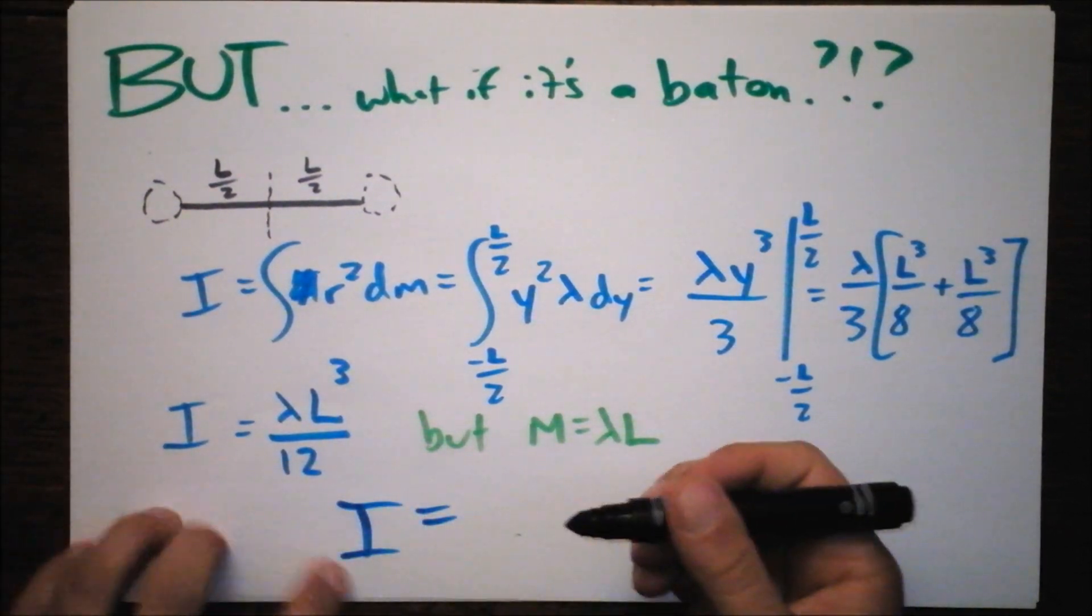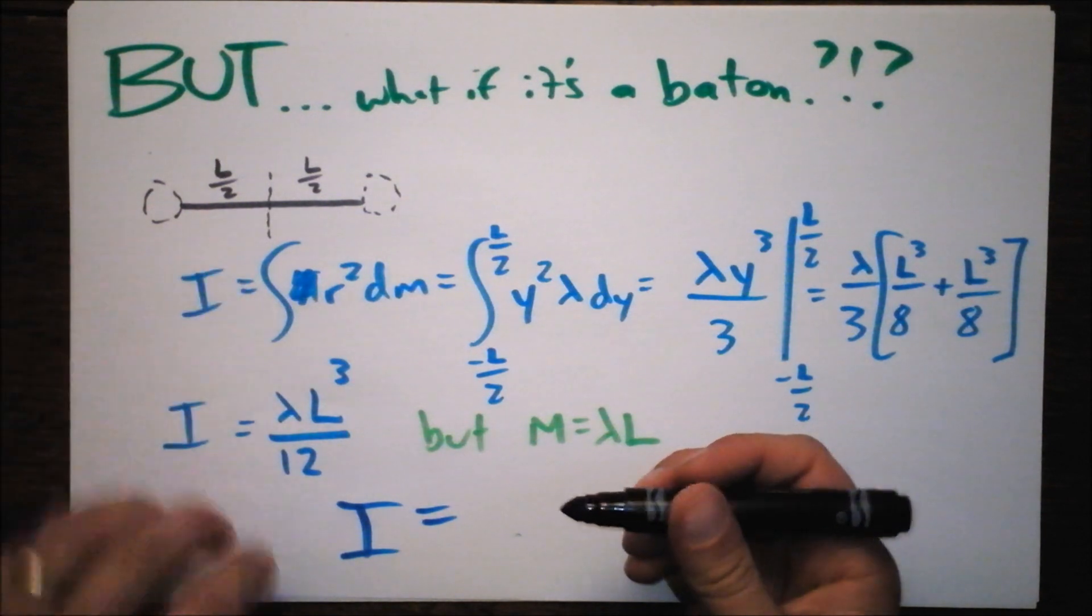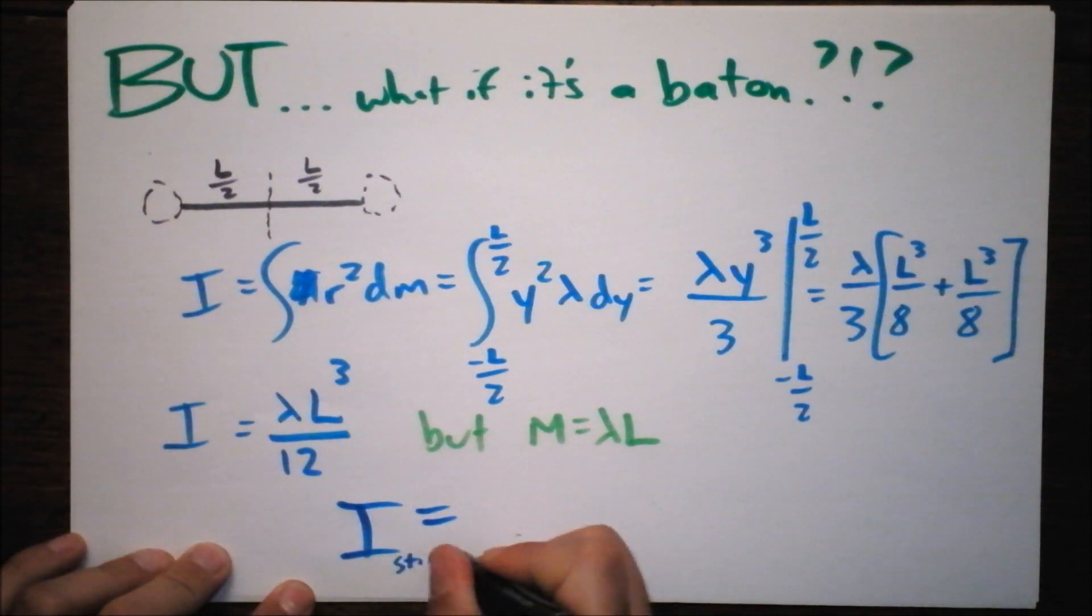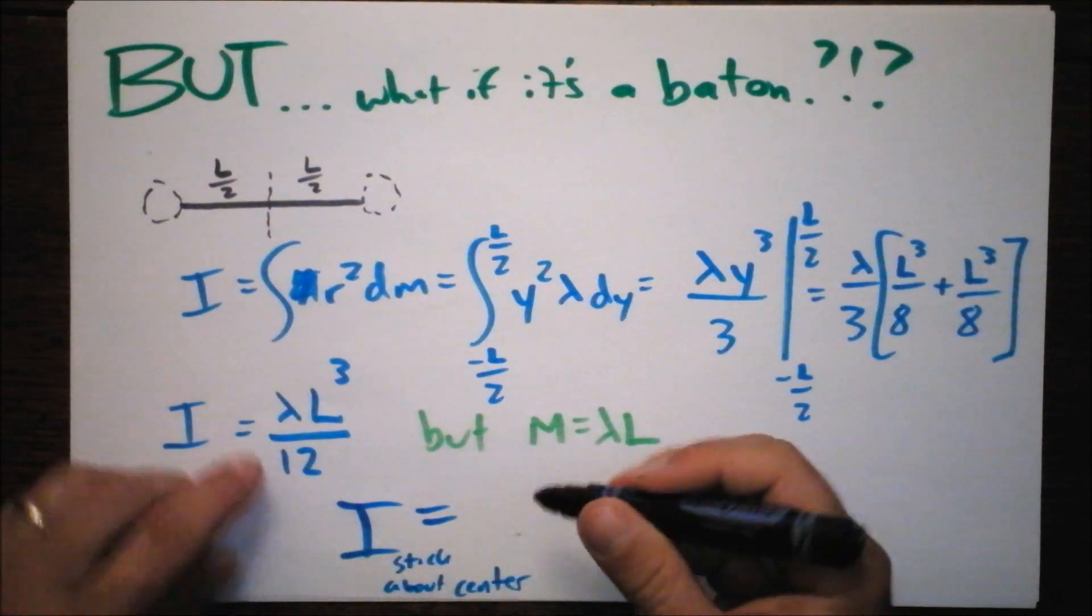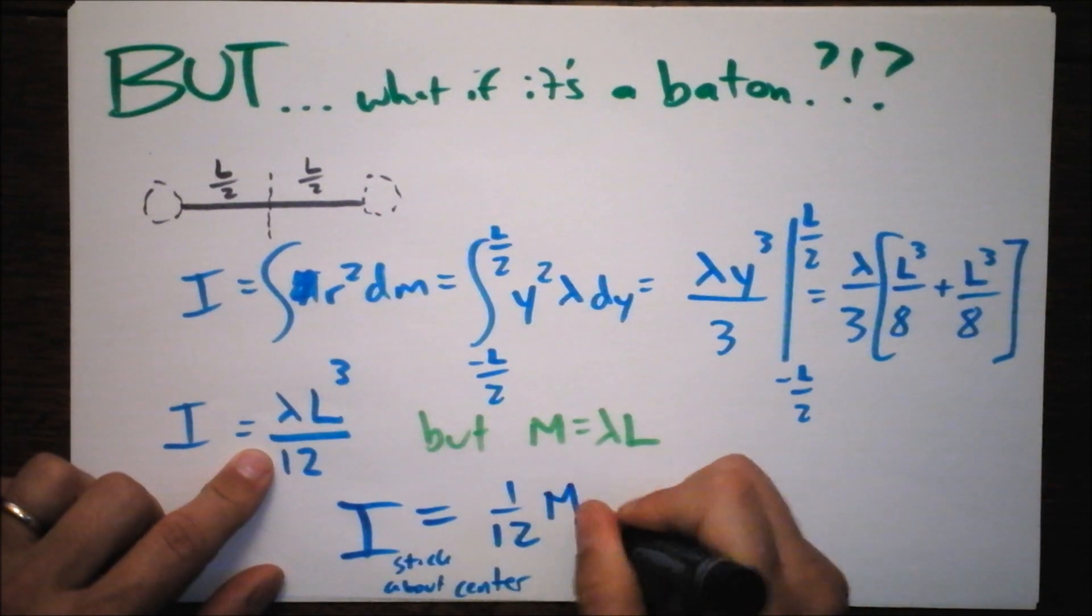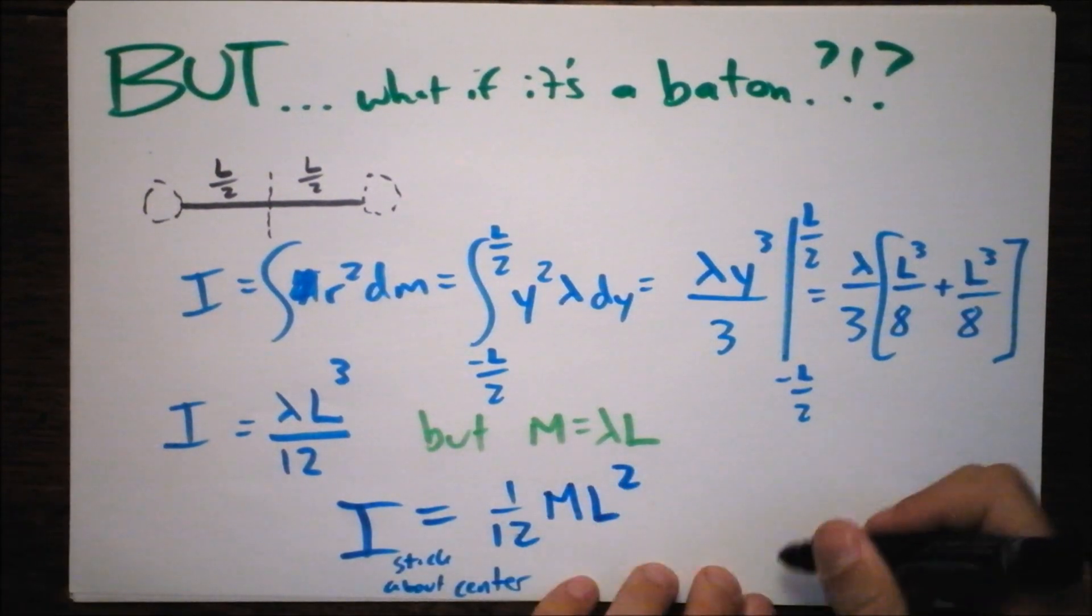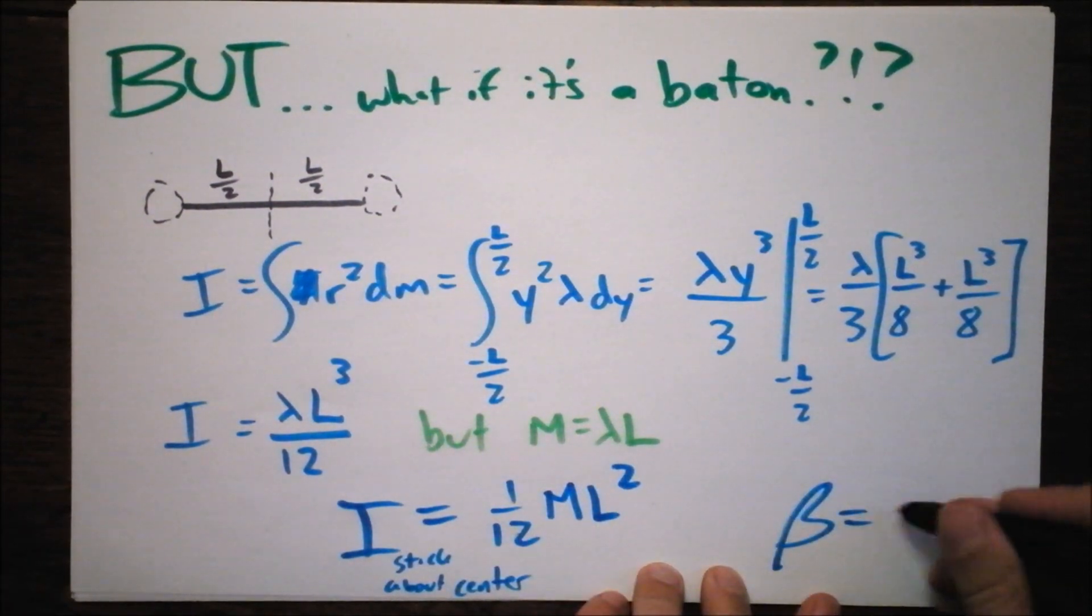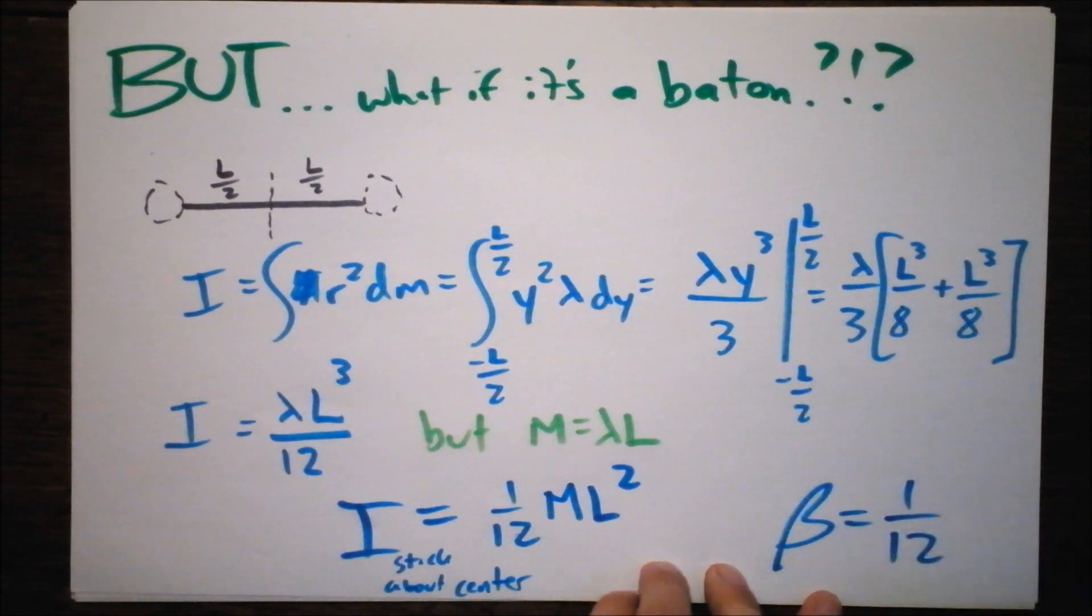In the case of the moment of inertia of a stick about the center, we end up getting 1/12th times the total mass times L squared. So we would say if we're simplifying things, beta here is 1/12th. Wow, that's really low.